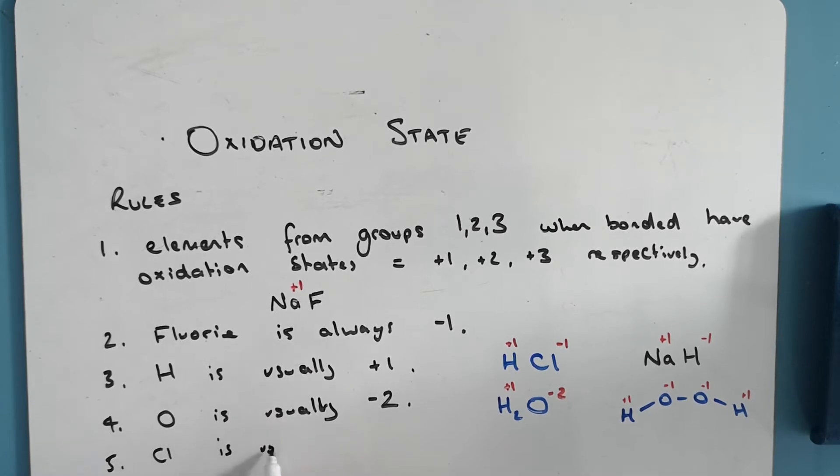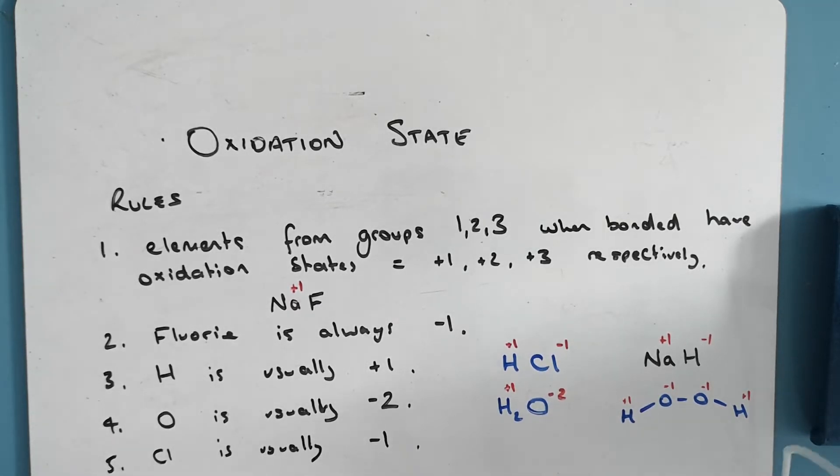Chlorine is usually minus one, except when it's bonded to something more electronegative. So if it's bonded with fluorine. We saw up here in HCl, it was minus one.